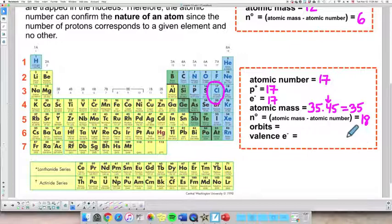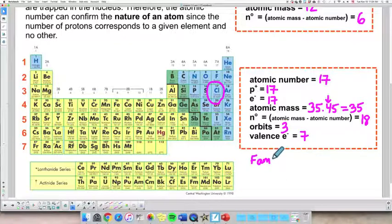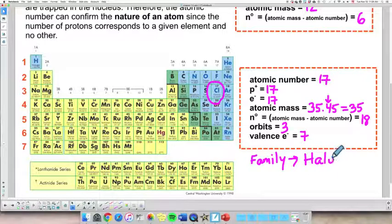Now, if we go one step further, we can determine how many orbits and valence electrons it has. Number of orbits, chlorine is in row number 3. So that means the number of orbits, or shells, or energy levels is 3. And the number of valence electrons, it's in group 7A. So the number of valence electrons is 7. And I could have added one more thing, the family. What would be the name of the family? Group number 7 is called the halogens.